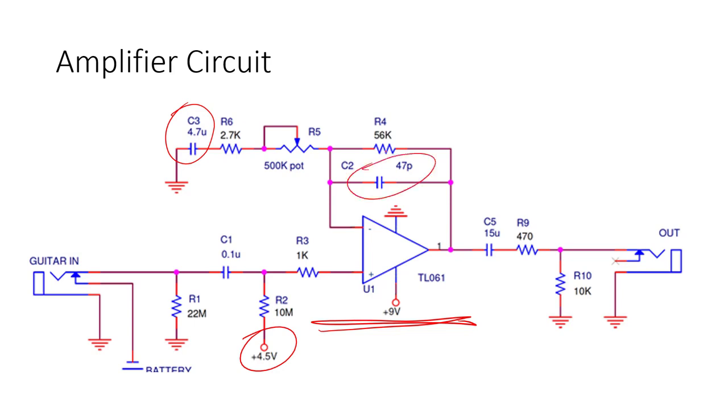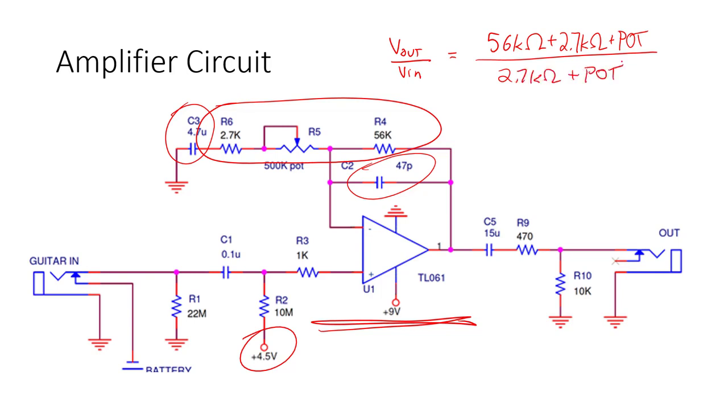The 47 picofarad capacitor here acts as a low-pass filter, removing interference. The gain of the entire circuit is set by the ratio formed by all of these resistors, and is going to be Vout over Vin equals 56 kiloohms plus 2.7 kiloohms plus the value of the potentiometer, divided by 2.7 kiloohms plus the value of the potentiometer. So there's a wide range of gains available to us.